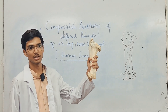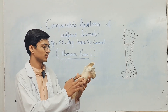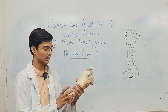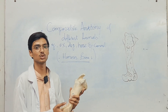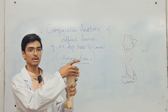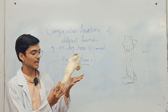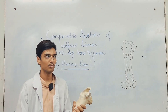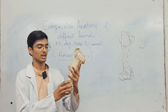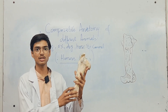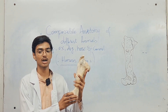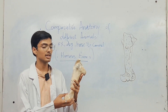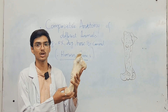So this is a humerus. The humerus can be subdivided into 3 parts: proximal extremity, distal extremity, and in the middle, this is the shaft. This is a humerus — humerus is also called stylopodium.